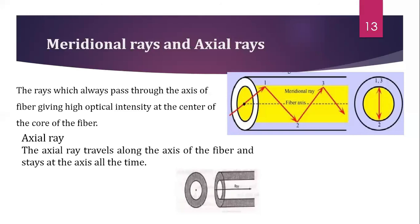Axial rays always take a straight line path. They travel along the axis of the fiber and stay at the axis throughout. The acceptance angle for axial rays is 0 degrees, so they take the least ray path. Since they travel in a straight line path along the axis, they travel very fast.